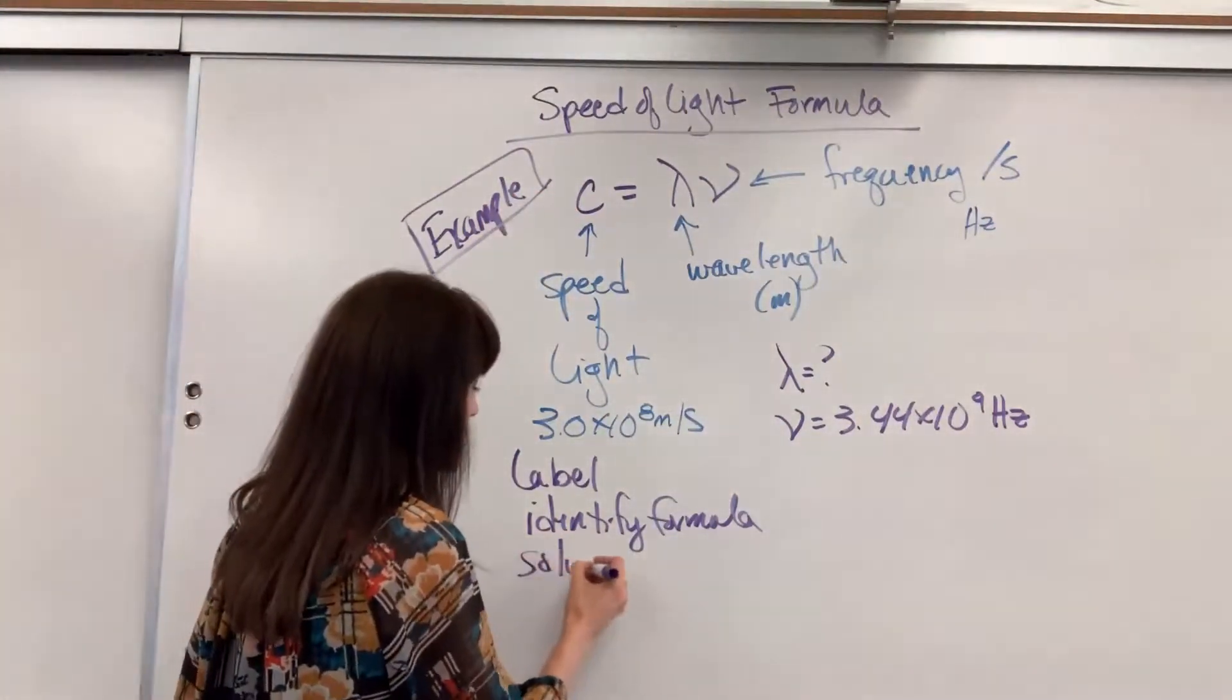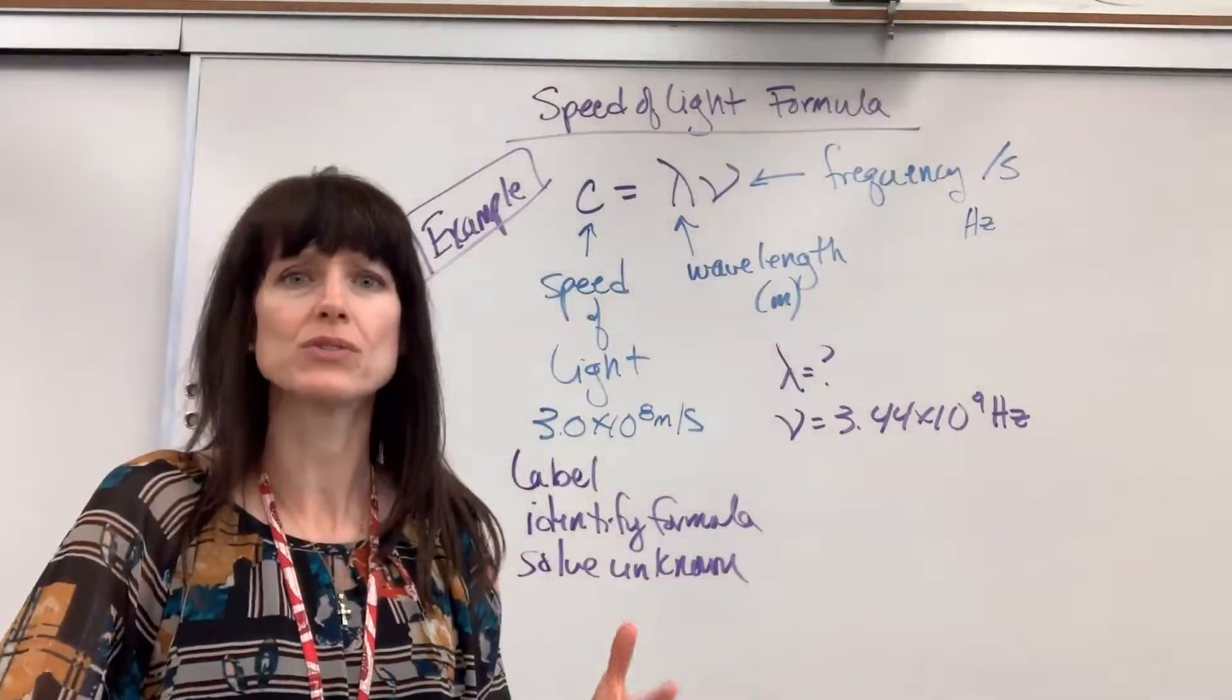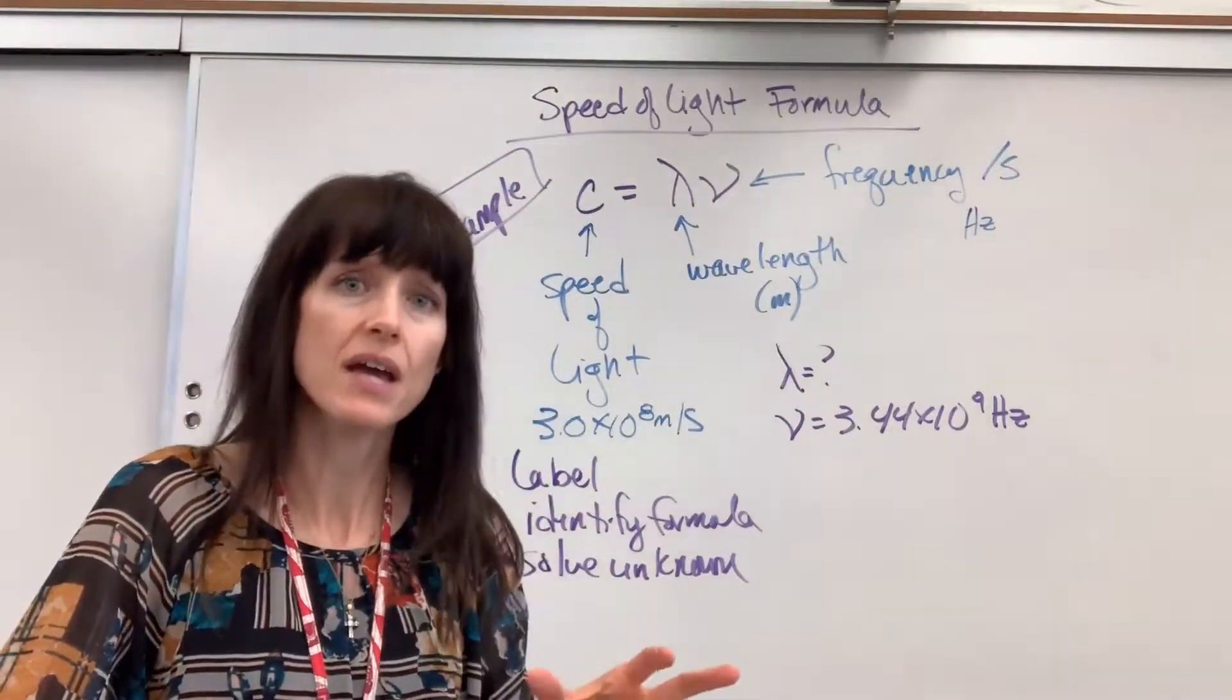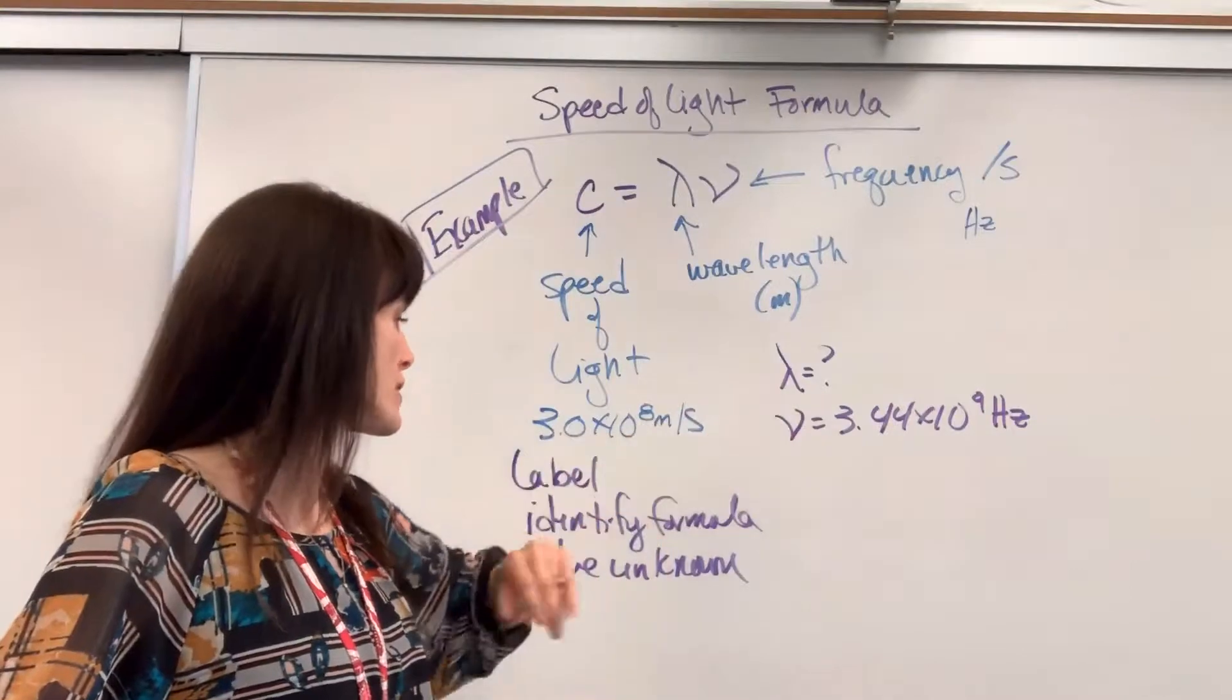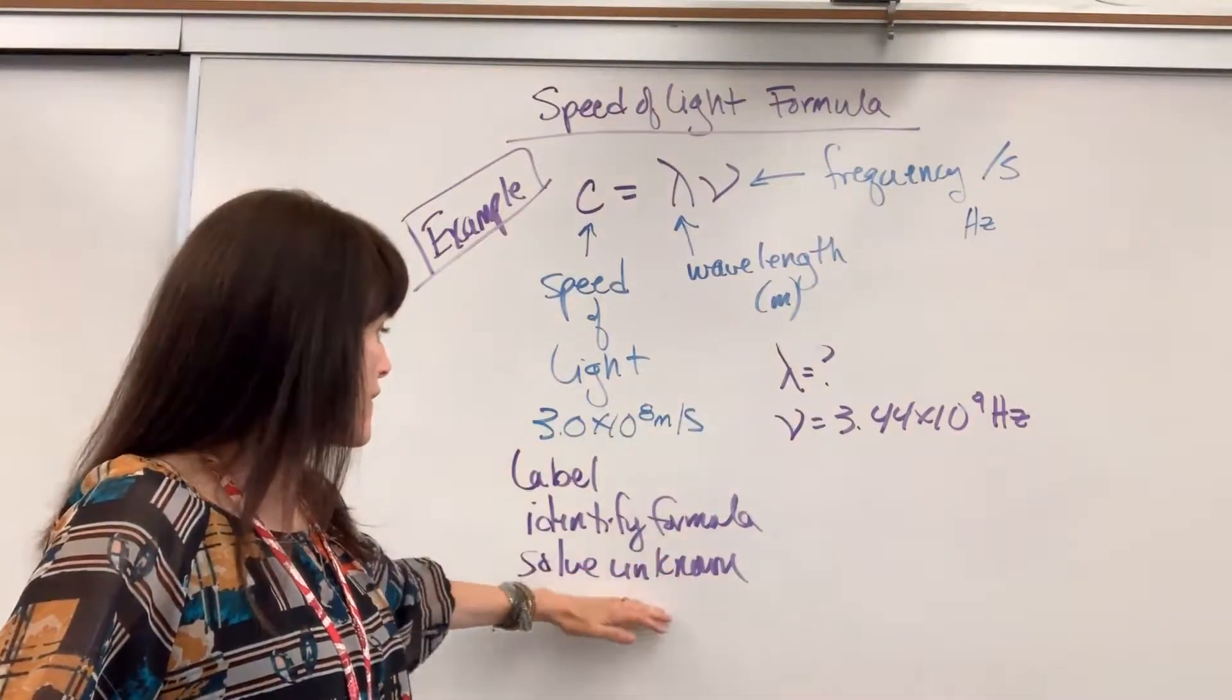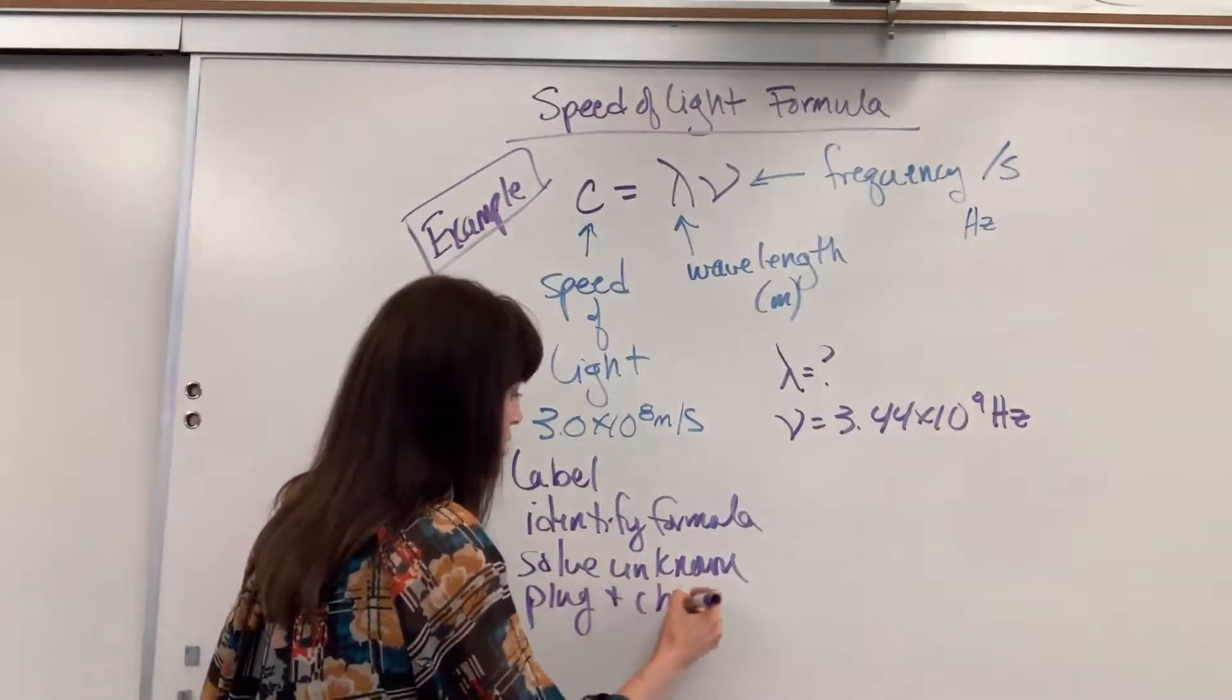Solve for the unknown is going to be your step 3. This is such a good practice. In habit, you always do this. Write down what you're given. Identify the path to figure out what you want to end with. And then solve for the unknown. Last part, super easy, just to plug and chug.